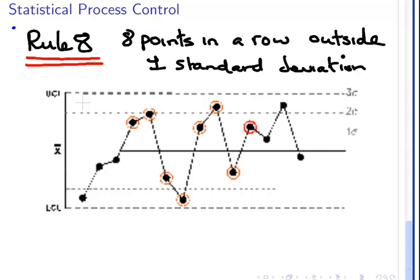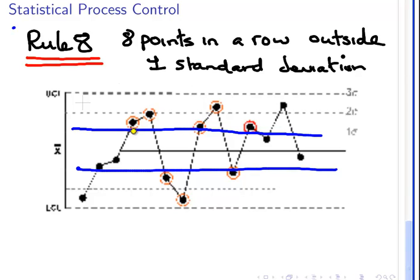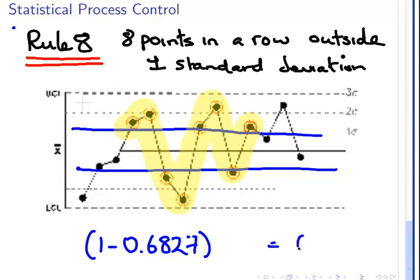So, rule 8. 8 points in a row outside one standard deviation. So, these points here are consistently outside one standard deviation. Starting from here, we have 8 points in a row outside one standard deviation. So, if the probability of being inside one standard deviation is 0.6827, the probability of being outside one standard deviation is 1 minus 0.6827, or in other words, 0.3173. And, for this to happen 8 times in a row, we just calculate that to the power of 8.